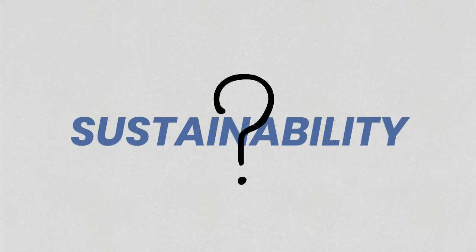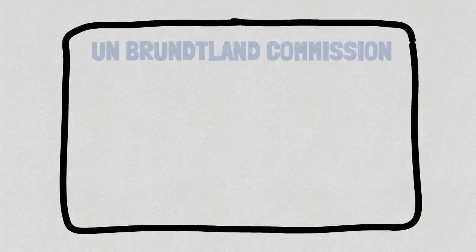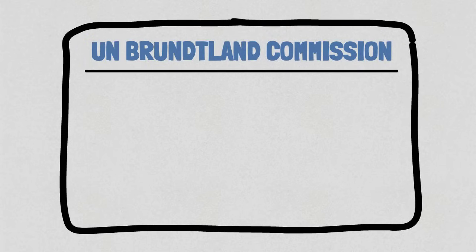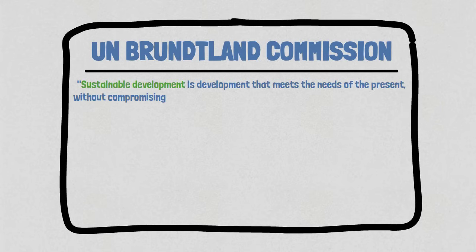What is sustainability? One of the more common definitions of sustainability used worldwide is from the UN Brundtland Commission. They say sustainable development is development that meets the needs of the present without compromising the ability of future generations to meet their own needs.